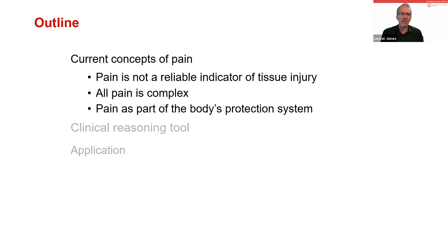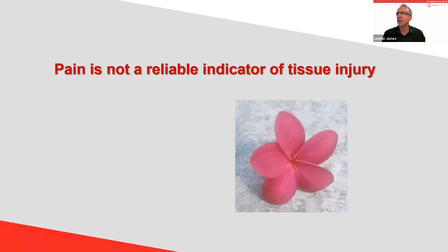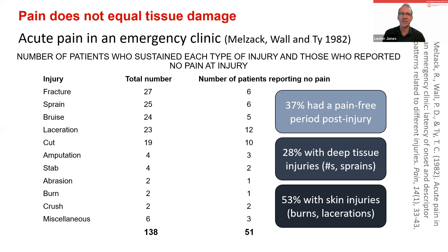I'll now present current concepts of pain relevant to understanding the model. We start with: pain is not a reliable indicator of tissue injury. In a study by Melzack and Wall, they sat in an emergency department and interviewed people as they came in, asking whether they had experienced a pain-free period. Over 37% reported a pain-free period despite frank tissue damage, including 28% of those with deep tissue injuries such as fractures or sprains.